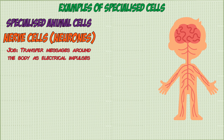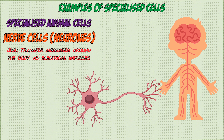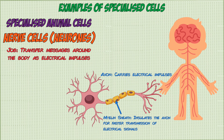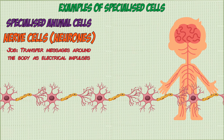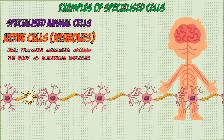The next type of specialized cell we have are nerve cells, also called neurons. These are found all over the body and transfer messages in the form of electrical impulses. They have long extensions called axons, which carry these electrical impulses, and these axons are surrounded by a myelin sheath which insulates them to make the electrical signals faster. They also have branching structures called dendrites, which extend from the cell body and increase the surface area, allowing neurons to connect with each other and receive and transmit electrical signals.